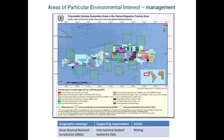Areas of Particular Environmental Interest, APEIs, are also a management tool. They are representative seafloor areas closed to mining activities in order to protect biodiversity and ecosystem structure and function. An example shows an area in the abyssal Pacific targeted for nodule mining in the Clarion-Clipperton Zone, which was created to safeguard biodiversity and ecosystem function.